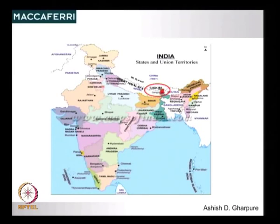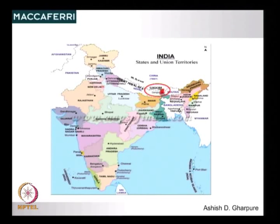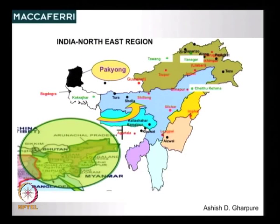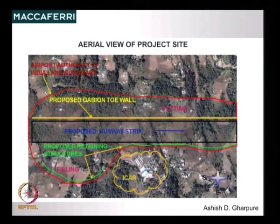This is the location of Sikkim — you can see the red dot there, surrounded by Nepal, China and Bhutan. There is no access except through this small portion of West Bengal, and this is what is proposed as an airstrip into the region. Since it is a completely hilly region, and for an airport you actually require a lot of flat land, it was very difficult right from the conceptual stage to build an airport in the region.